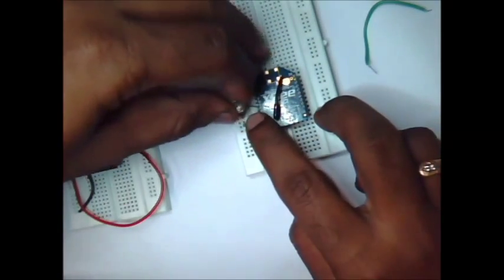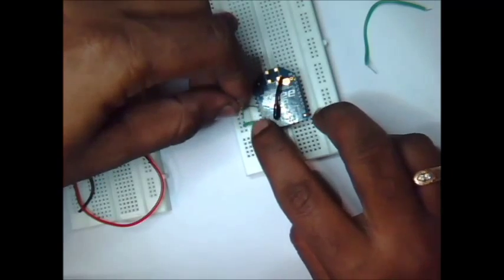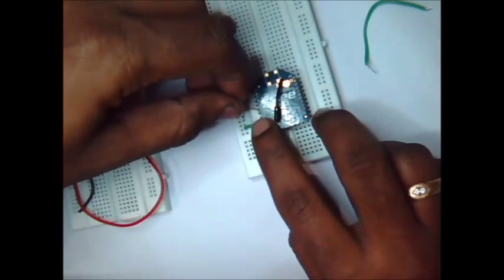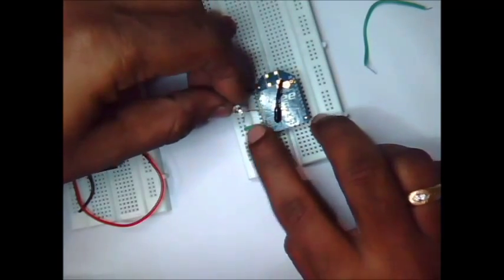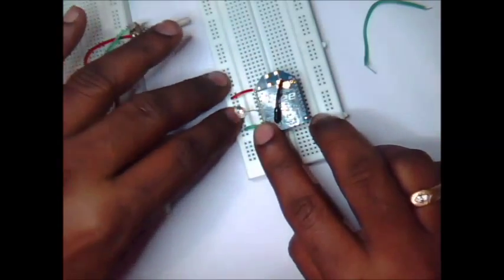Now we have to connect an LED to pin 6. Pin 6 is the PWM 0. Long lead of LED is connected to pin 6 and short lead to ground.